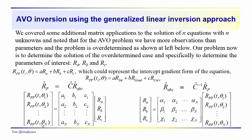We have all these observations — these would be the different offsets, from 1 degree, 2 degrees, out to 50 or 60 degrees. In this general equation, a generalized form of rp of theta, we do note that we are looking at a particular time. We have rp of theta equal to some combination of three parameters — the intercept, gradient, and curvature — in this formulation of the reflected P-wave amplitudes at time t.